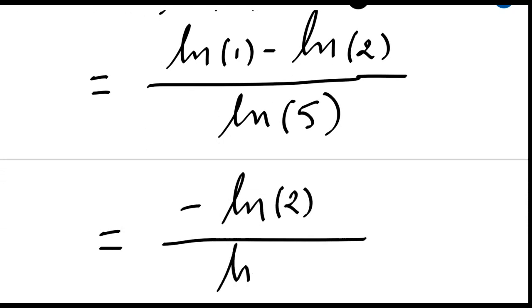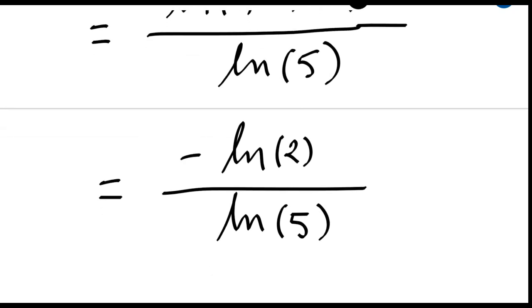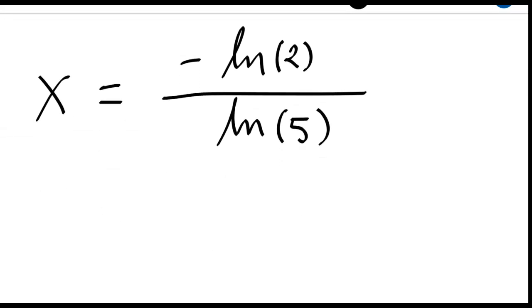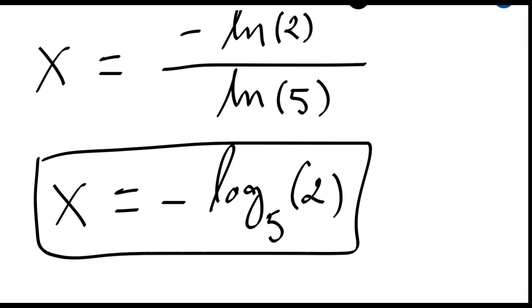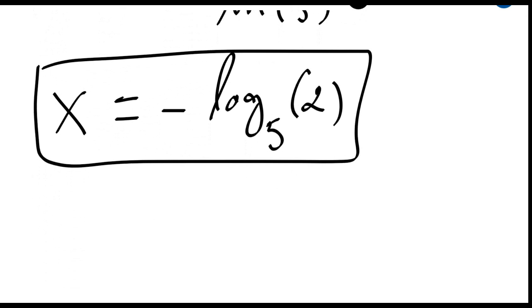So this is my solution x which is again x equal to minus the ln function base 5 of 2. So this is the final solution for my equation 5 raised to the power x plus 5 raised to the power x plus 1 equal to 3.